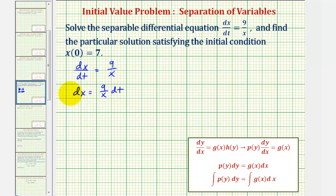And now because the dx is on the left side, we want the variable x on the left side. So let's multiply both sides of the equation by x, giving us x dx equals 9 dt.